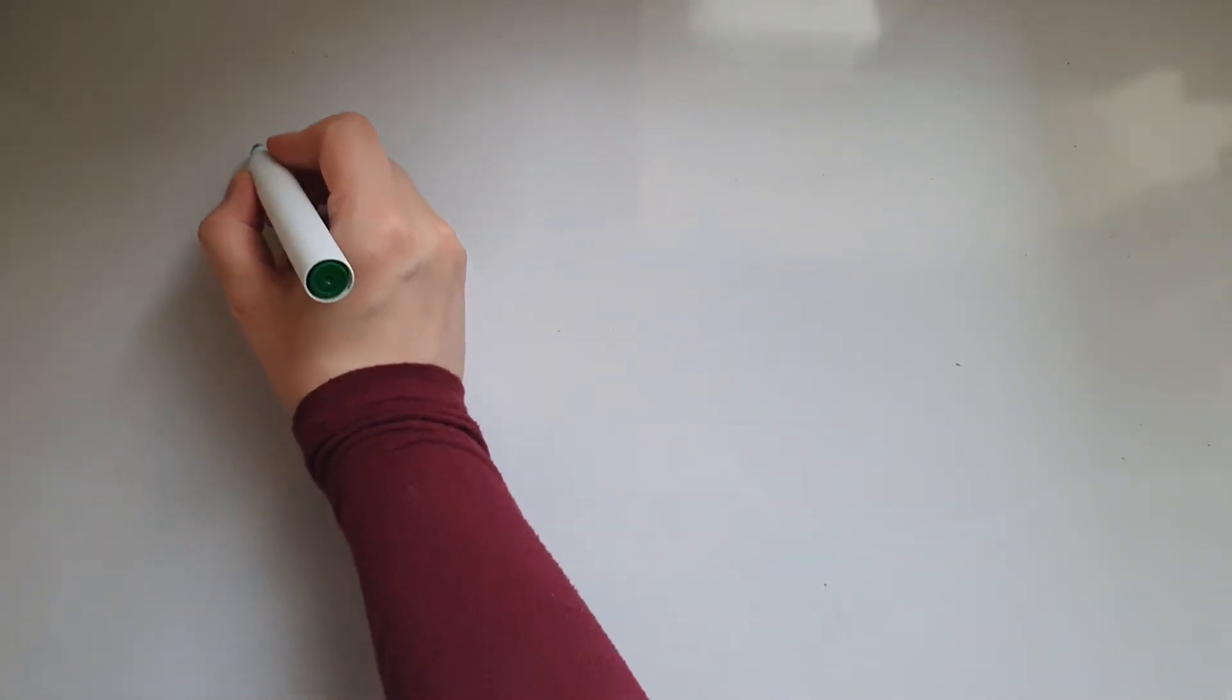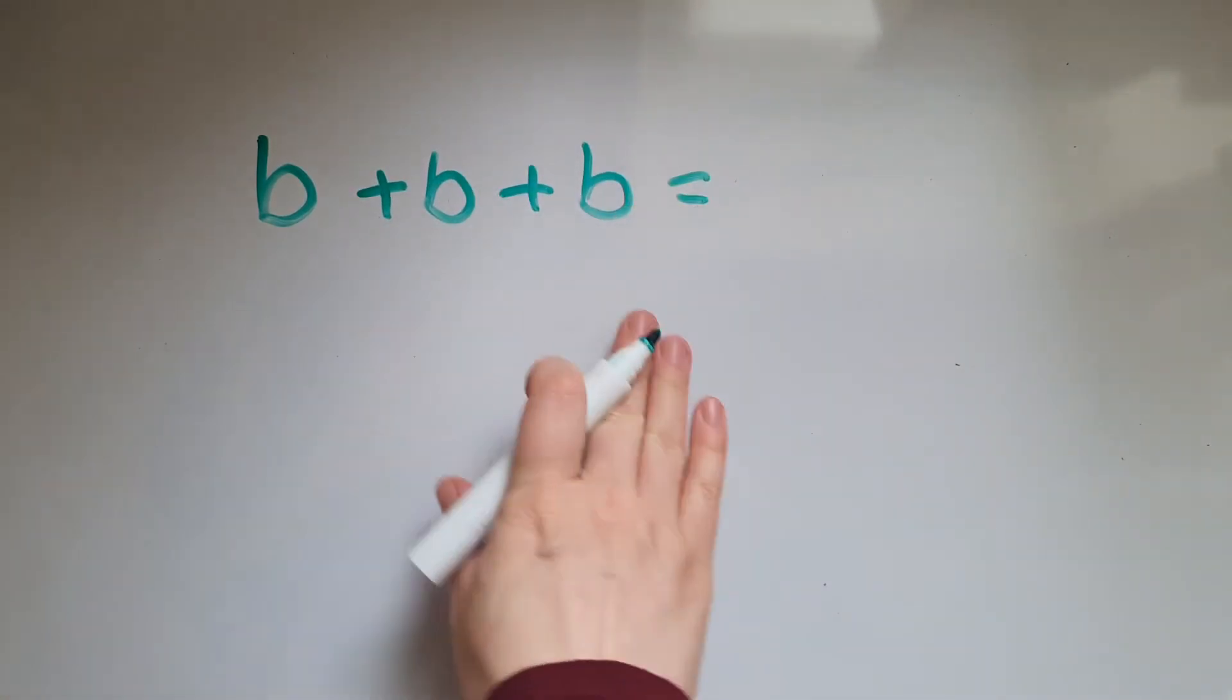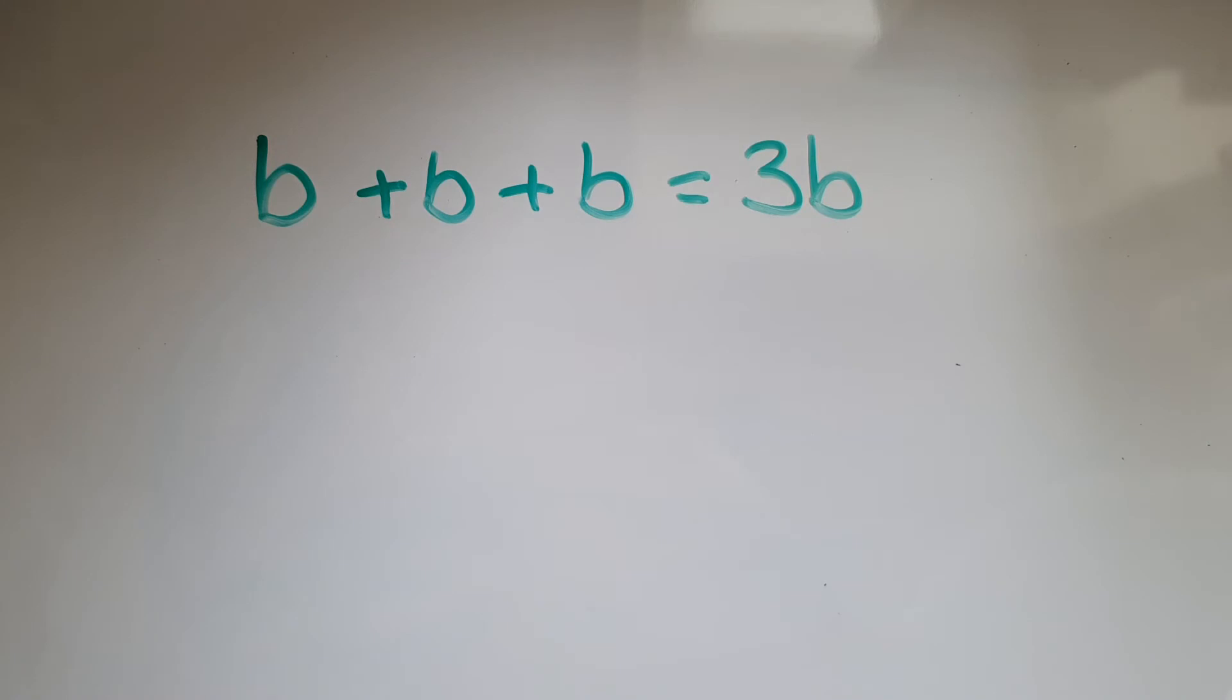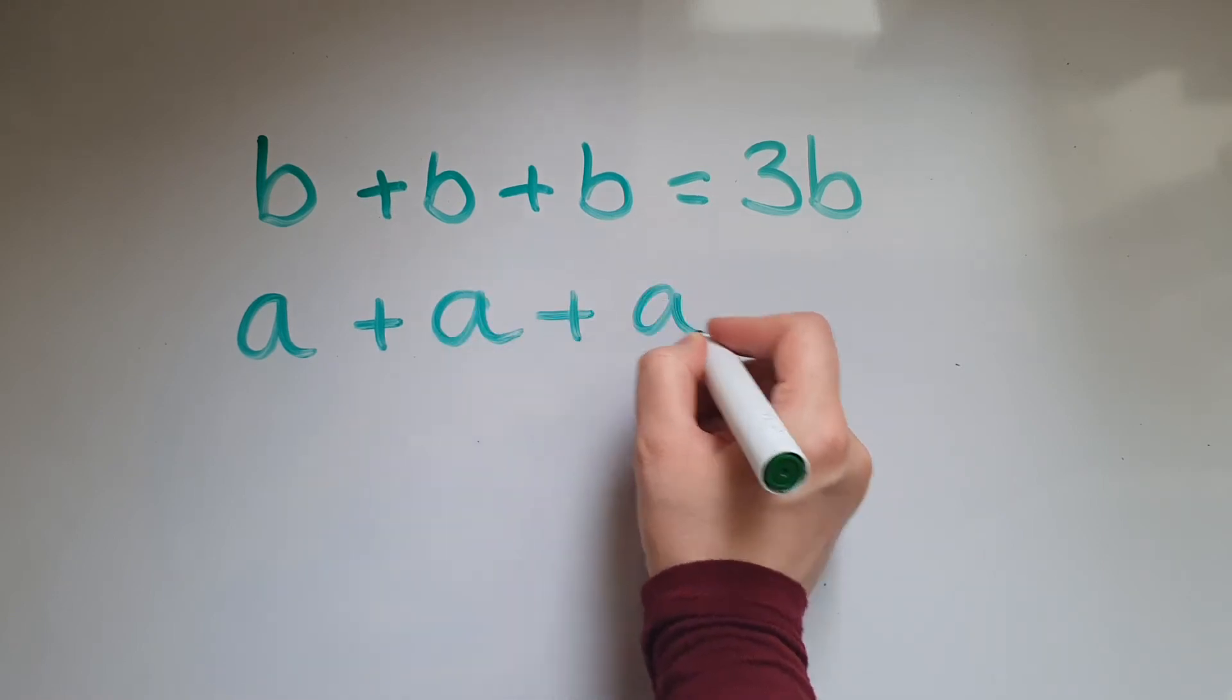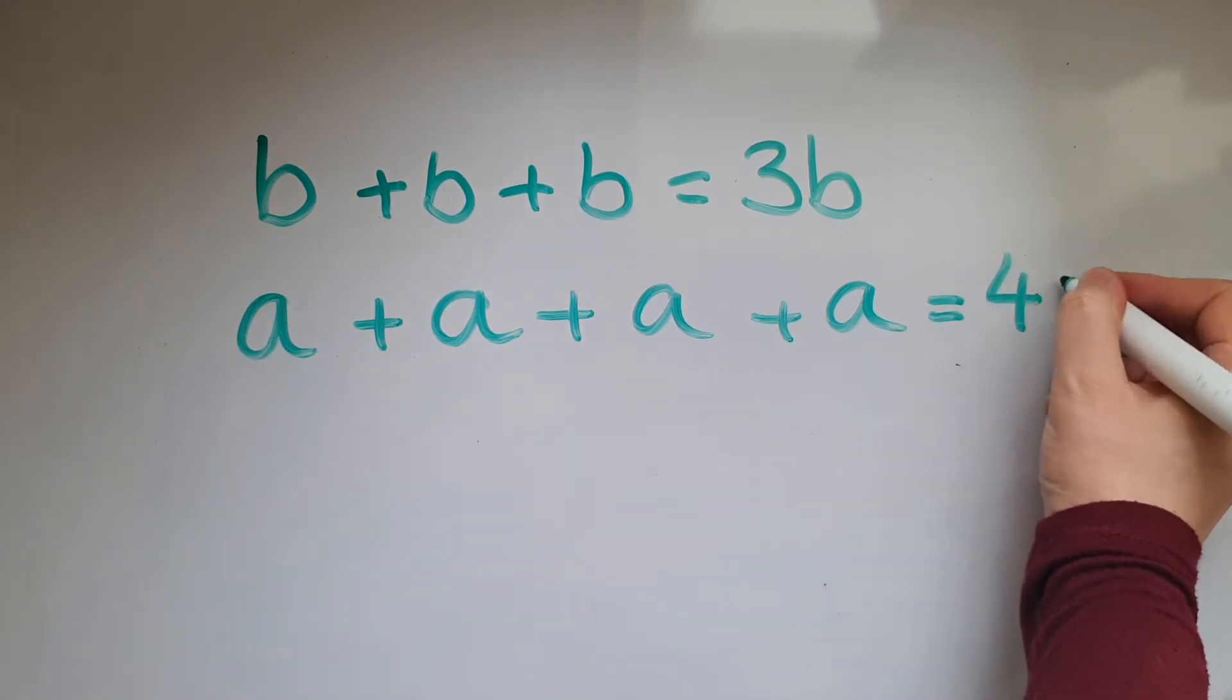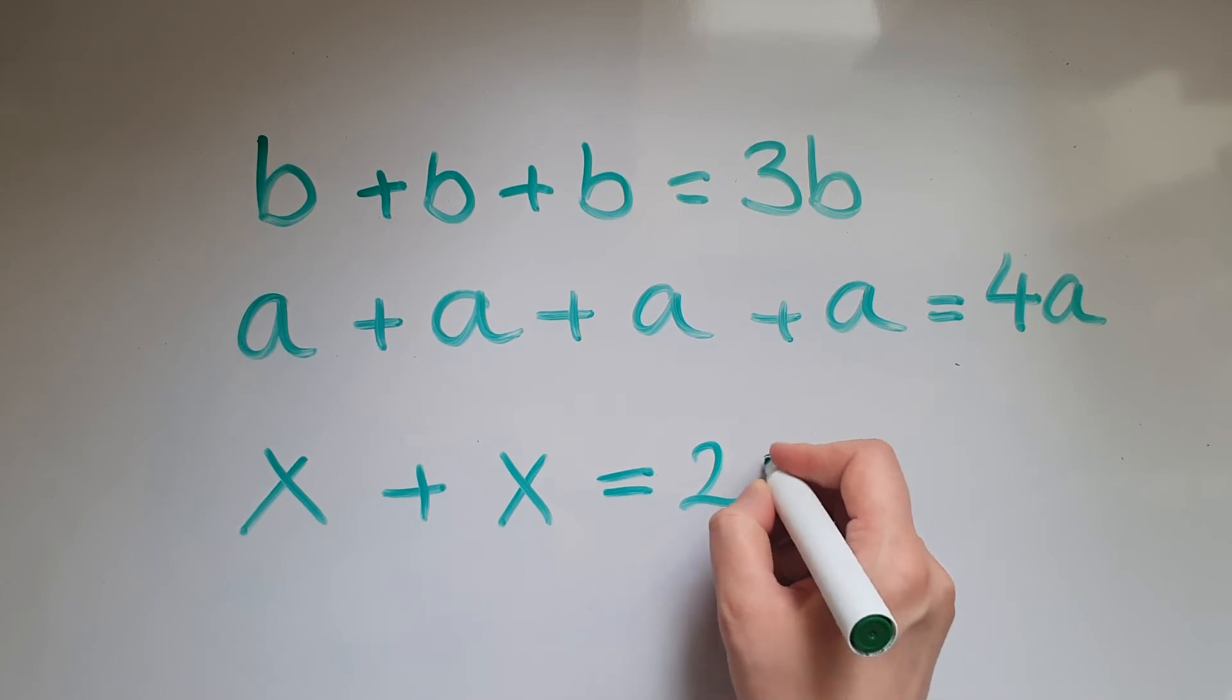So, if I go to the shop and buy one banana, and I buy another banana, another banana, the short way to write this will be 3B. Same thing if I go and buy apples, one apple, two, three, four apples, then four A. Or I buy two other items, which I don't know what they are, and I'm denoting it with X. So, X and X makes 2X. This number in front is telling us how many of these.